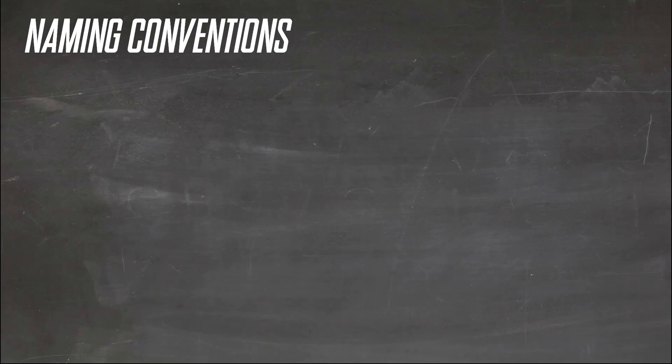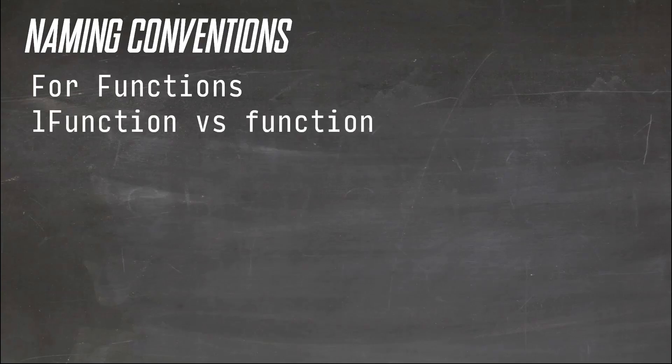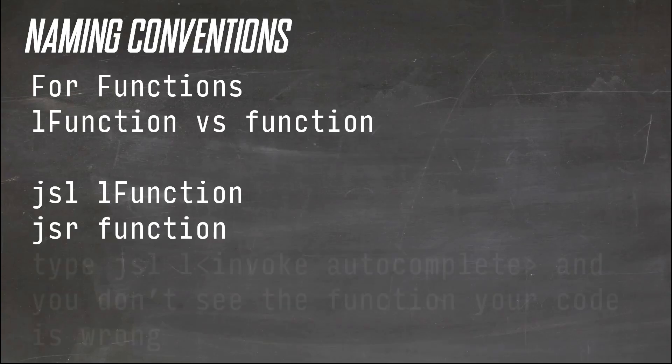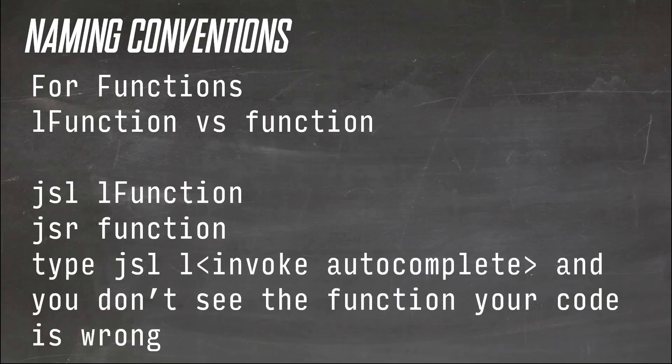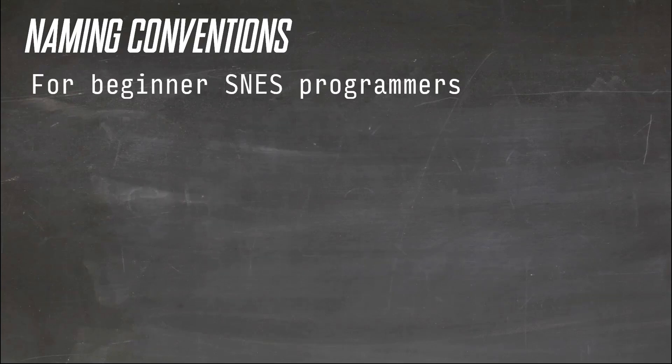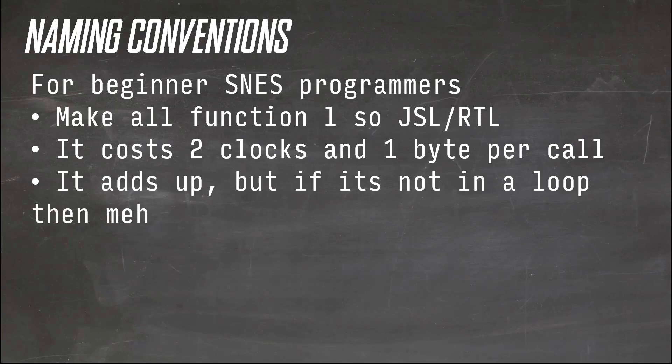I also extend this to functions in 65816. An l_function, or function_long, denotes that this function needs to be JSL'd to and not JSR'd to. It's a very important distinction and will nail you many, many times. Autocomplete will help in this case, as you will get into the habit of typing JSL_L, then invoke autocomplete. And if the function isn't there, your code is wrong. For absolute beginners, I would go as far as to say, hang the two extra clocks and bytes per call, and just do everything long. And once you know how your code is used and is working, then optimize and remove long when not needed and gain the two clocks back.